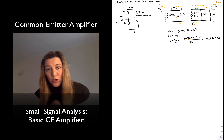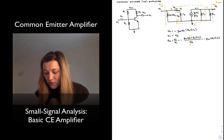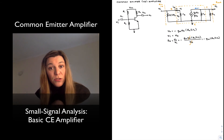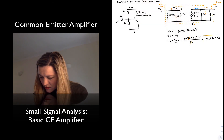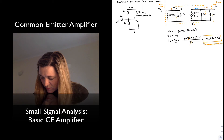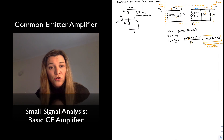I've used the Gm terminology on purpose, rather than beta·IB, so that we can clearly see that a BJT transistor can be understood as a transconductance device. The voltage gain is defined as Gm — the small signal transconductance — times the output resistance, which in this case is RC in parallel with ro. This is a transconductance amplifier. It's good to think of a transistor this way because that model extends also to MOSFETs, giving us a generic framework to understand all transistors.